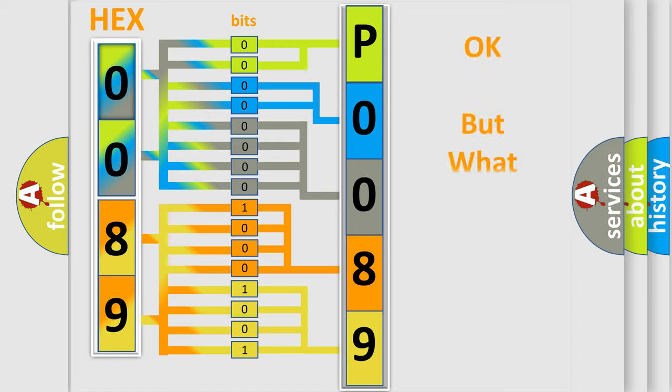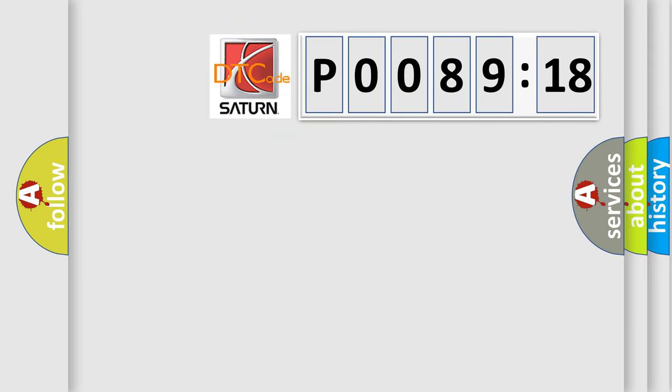We now know in what way the diagnostic tool translates the received information into a more comprehensible format. The number itself doesn't make sense if we cannot assign information about what it actually expresses. So, what does the diagnostic trouble code P008918 interpret specifically for Saturn car manufacturer?